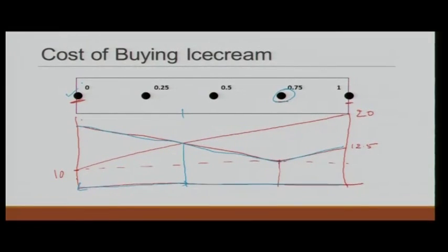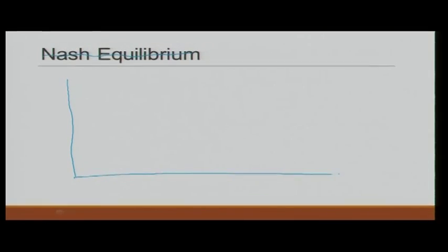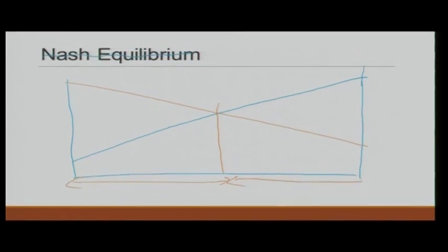Let us consider the case where one vendor parks at one end (position 0) and the other parks at the other end (position 1). Cost increases from 10 to 20 in one direction and from 20 to 10 in the other direction. Both vendors will capture exactly half of the market. Can we call this a Nash equilibrium — one parking at one end and the other at the other end?